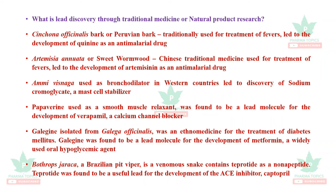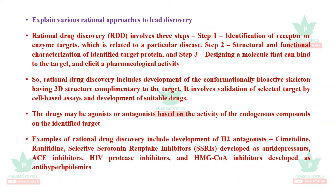Rational drug design and rational approaches to lead discovery involve logical reasoning in three steps: identify what receptor or protein target is involved, characterize which amino acids form the binding pocket, then determine how the lead needs to fit or bind and how hydrogen bonds can be used. Examples of rational drug design include adrenaline-based structures, antihistamines like cimetidine and ranitidine, selective serotonin reuptake inhibitors, angiotensin converting enzyme inhibitors, and HIV protease inhibitors.